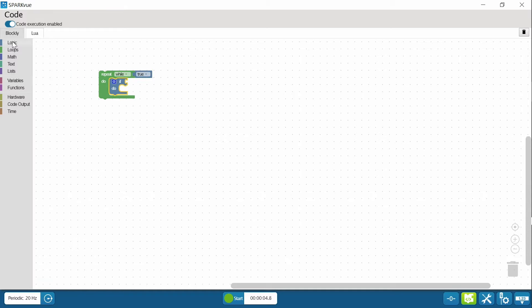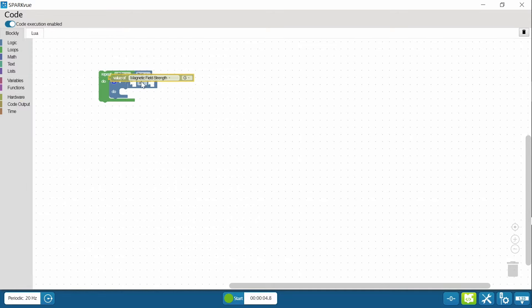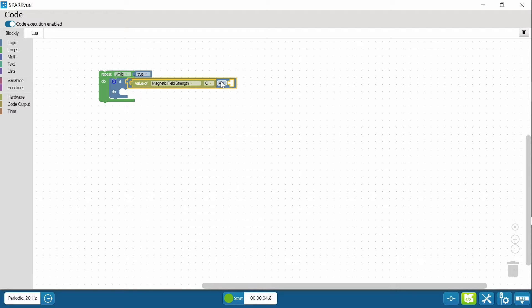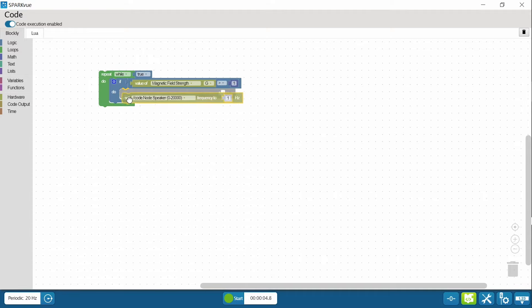Pull that over. And I'm going to pull in a conditional block. And I'm going to have it say if the magnetic field strength is greater than 1, it's going to cause the speaker to go off. So I need to go on hardware again. Pull that out. I'm going to put this at 1000 Hz so you guys can hear.